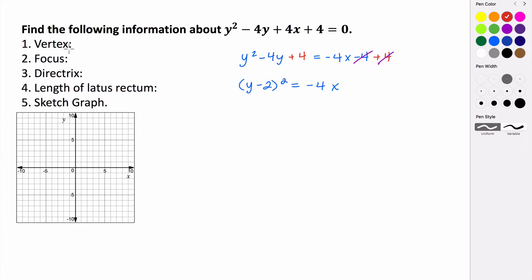So our vertex is at the point... So you can kind of imagine this as being x minus 0. So making our vertex the ordered pair 0, 2. So this is our vertex.